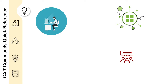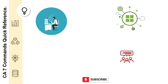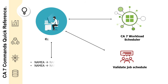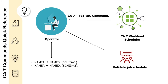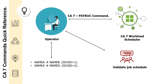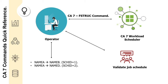Let's say you are working for a multinational bank that is using IBM mainframe to host its core banking applications, and they are using CA7 workload scheduler to schedule, run and monitor daily batch jobs, which is used to process billions of transactions that happen throughout the day. Being an operator, you should know how to use the CA7 F-STRUCF command, which is generally used to display the structure of each schedule.